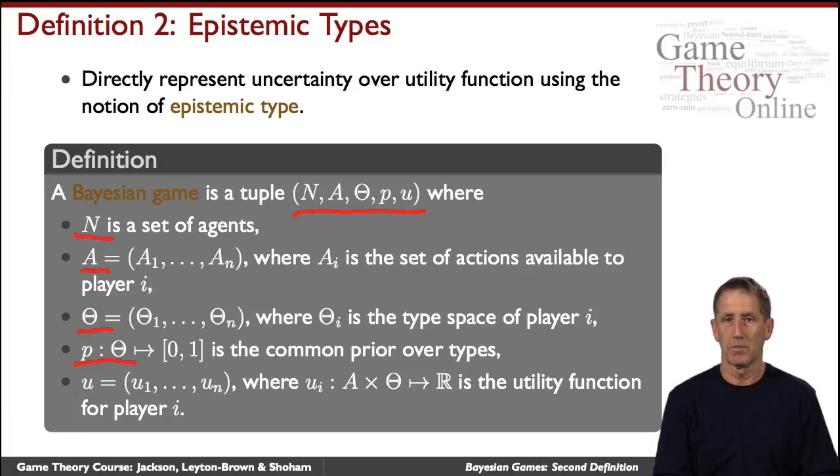Therefore, they also have a posterior about the type of the other agents and beliefs about what the other agents might believe about their own type, and so on and so forth. This is the type of the agent, and we have the utility function now depend not only of the actions taken by the agents, but of their type. That's the formal definition.